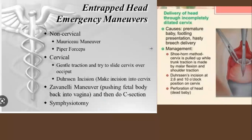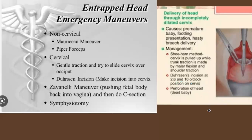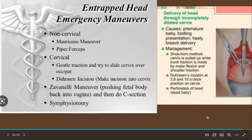Emergency maneuvers for an entrapped head include: Mauriceau-Smellie-Veit maneuver, Piper forceps, and cervical incision — applying gentle traction, sliding a cervix over the occiput, and performing a dorsal incision into the cervix at the two, six, and ten o'clock positions. The Zavanelli maneuver involves pushing the fetal body back into the vagina and then performing cesarean section. Symphysiotomy may also sometimes be required. Note: craniotomy is occasionally practiced in some parts of the world for a dead baby, but is not current UK practice and need not be mentioned.